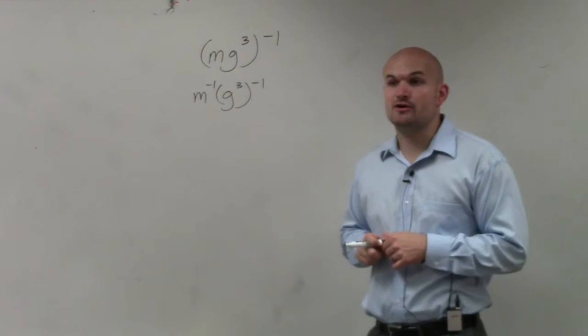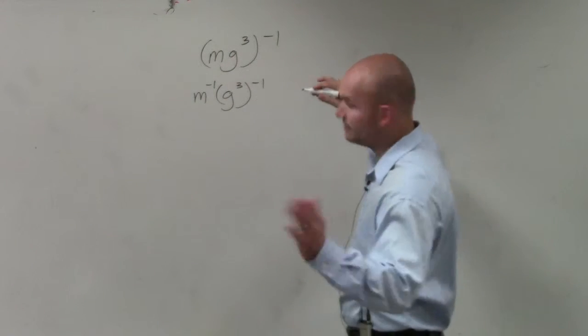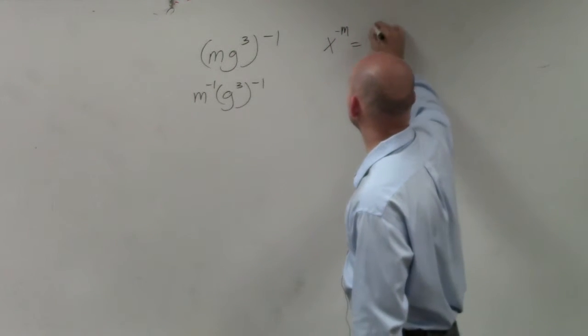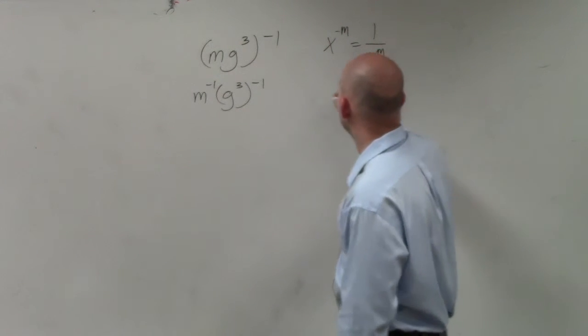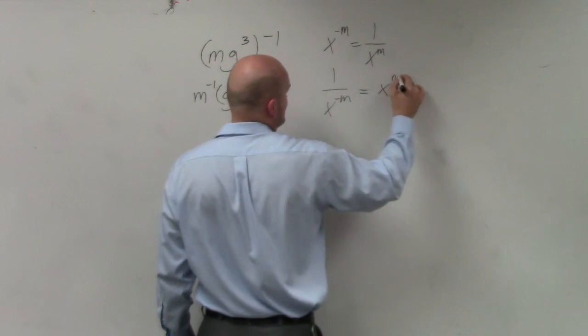Now, we just need to understand or remind ourselves what happens when we have a negative power. Well, in one of those examples, x to the negative m is equal to 1 over x to the m. Or if you have 1 over x to the negative m, that equals x to the m.